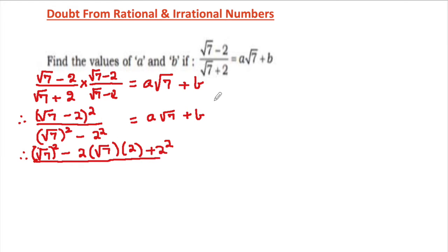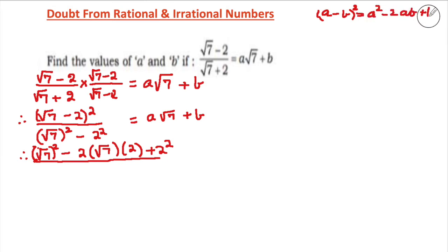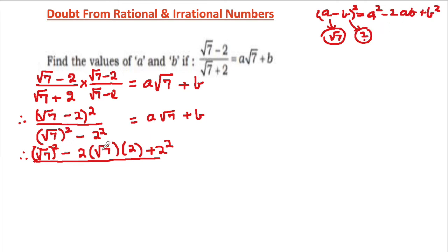The formula we made use of here is that (a minus b) whole squared equals a squared minus 2ab plus b squared. Our a was √7 and b was 2, so wherever there is a we write √7 and wherever there is b we write 2. That is how we got this numerator. The denominator will be √7 multiplied by √7.